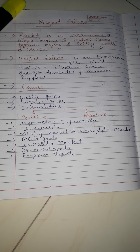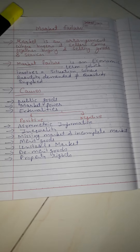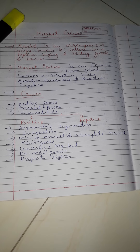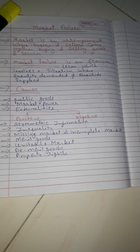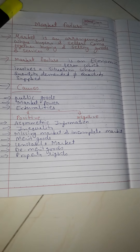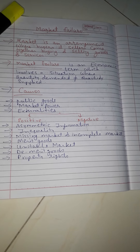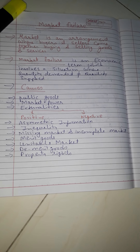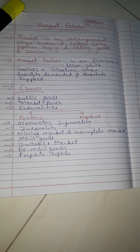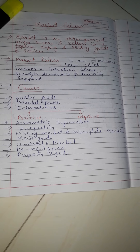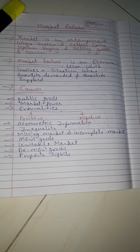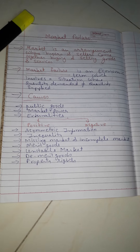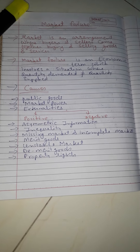The next cause is property rights. Property rights means the allocation of property should be equal between consumers as well as producers — this will help the market to perform efficiently. But in many cases, allocation of property rights is not equal between consumers and producers, so it leads to market failure.